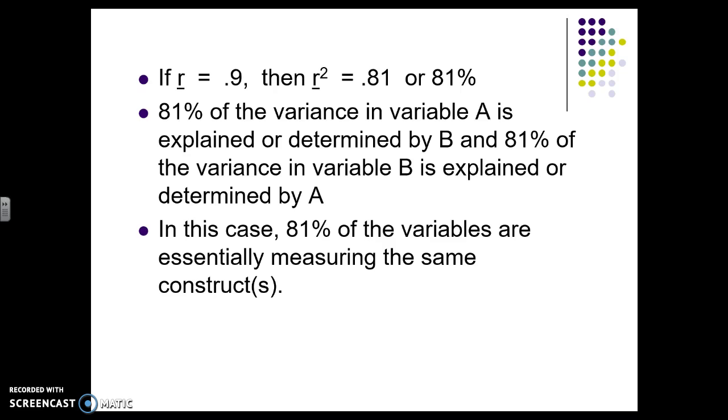So this means 81 percent of those two circles are overlapping and are essentially the same. They're measuring the same thing. So if I know A, then I can talk about 81 percent of B.